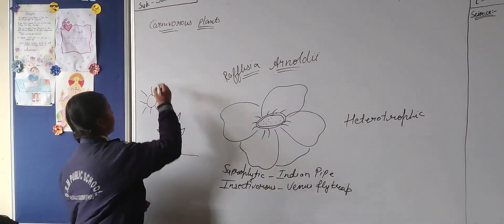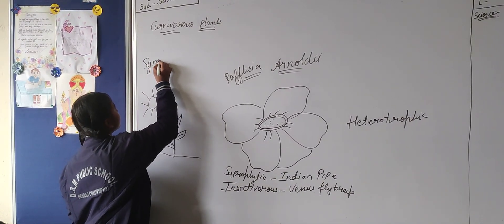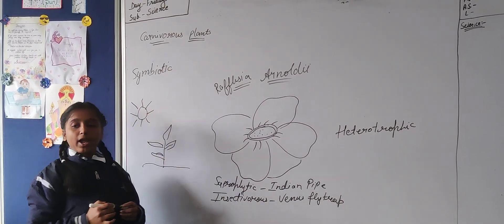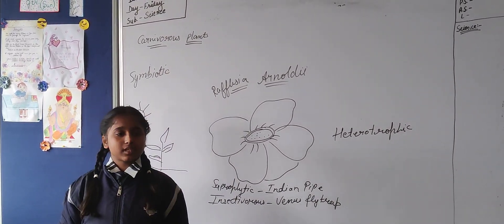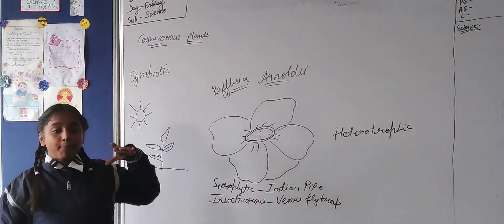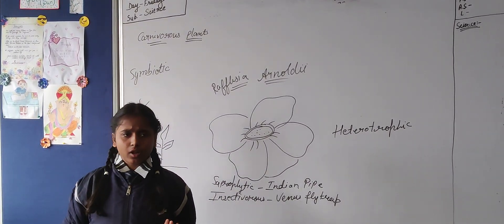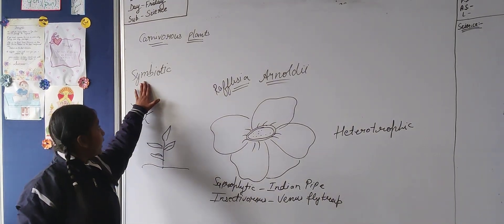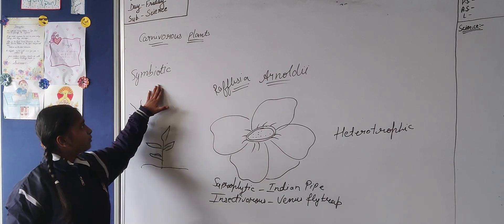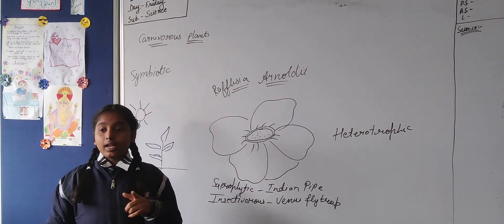And the next one is symbiotic. Symbiotic plants cannot survive lonely because they need a partner to survive. They have enough chlorophyll but they don't live without a partner. That's why they search for another plant like lichen.